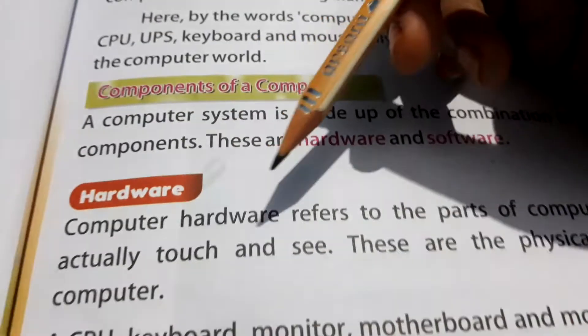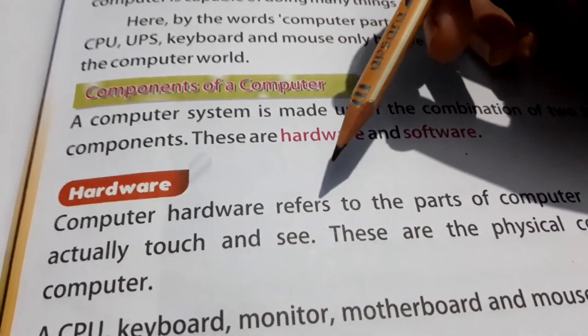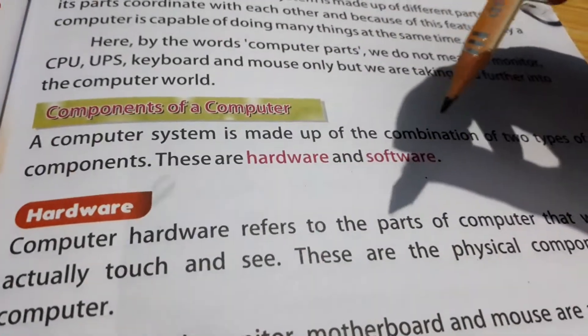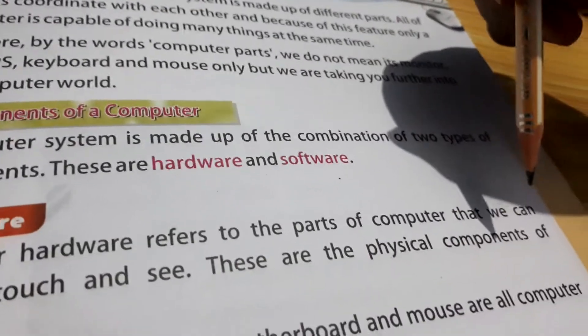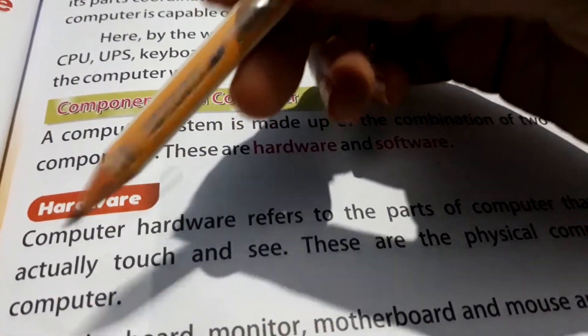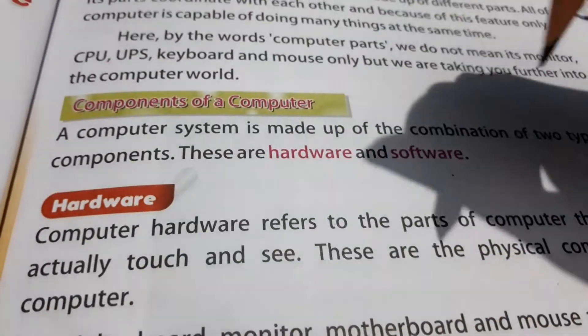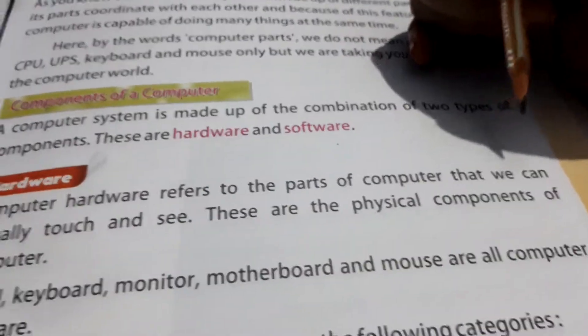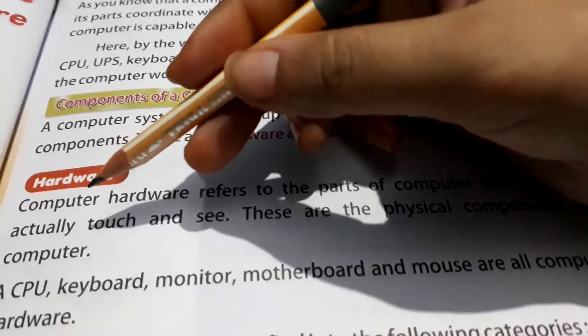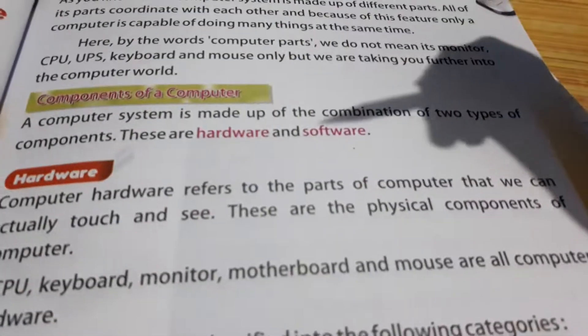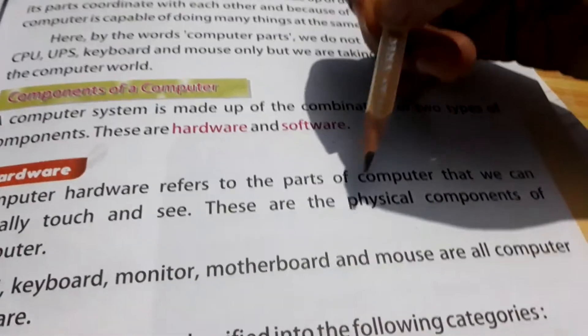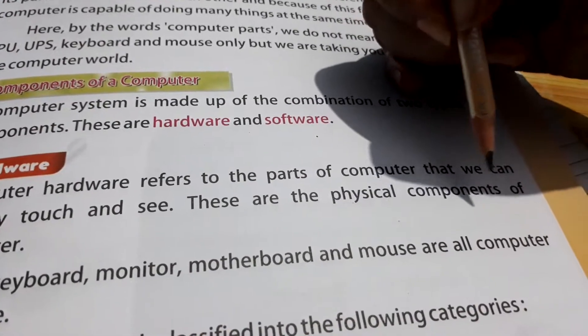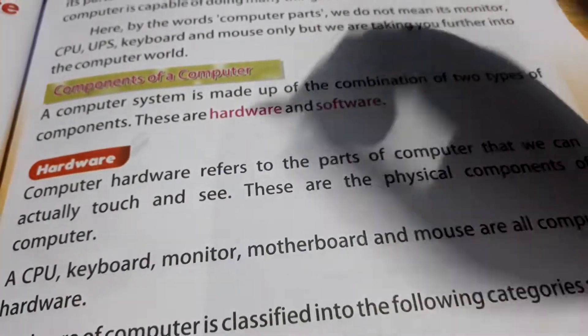Now we are talking about hardware. Computer hardware refers to a part of a computer that we can actually touch and see. Hardware is shown here. There are parts of computer which we can actually touch and see. These are the physical components of computer.